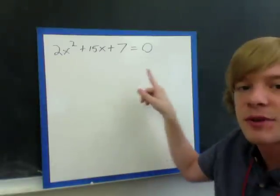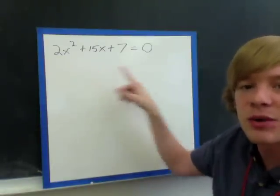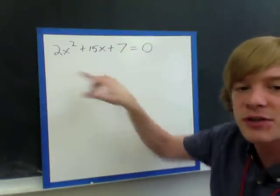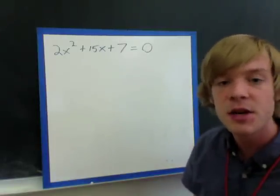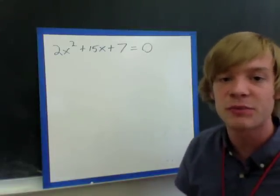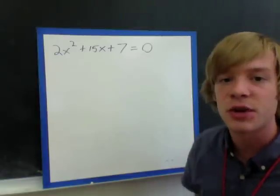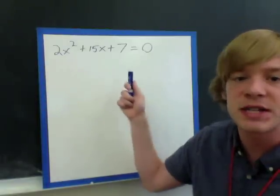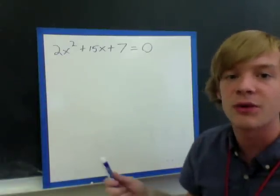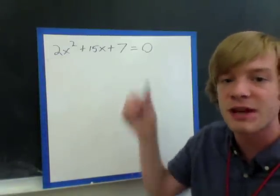Now that I have my quadratic equation, I can factor my expression, and we can solve and find out what x is using the same methods that we've been practicing in class. So, first thing I want to do, since there's no number that divides 2, 15, and 7 other than 1, I want to start by multiplying 2 times 7.